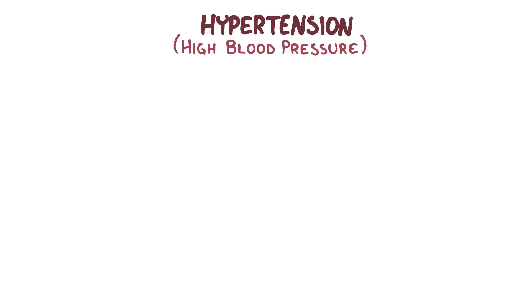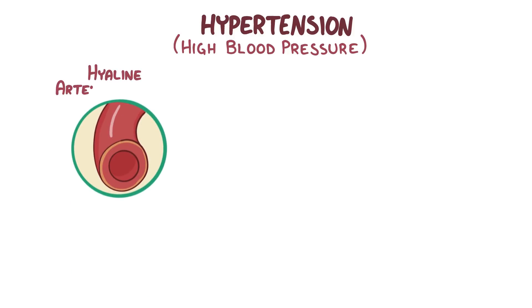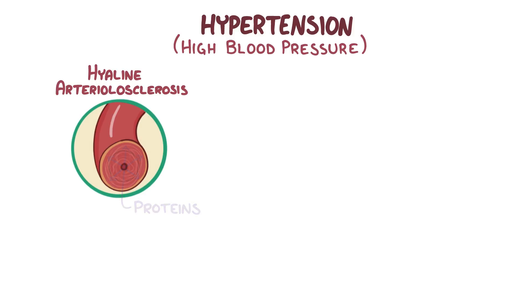There are a few ways that an intracerebral hemorrhage might happen. The most common is through hypertension, or high blood pressure. Hypertension can lead to various vessel wall abnormalities, including hyaline arteriolosclerosis, which results from hydrostatic pressure pushing proteins out of the blood vessel lumen and into the interstitial space within the blood vessel walls. Over time, as more of these proteins deposit into the walls, the blood vessels become more stiff and brittle, and therefore more vulnerable to rupture.